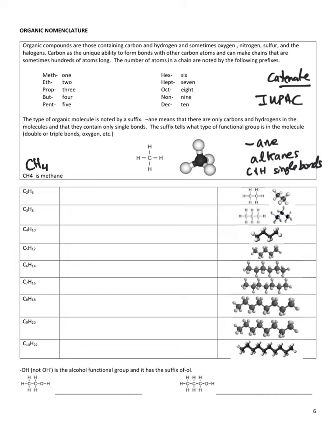One carbon in a chain is methane. Two carbons in a chain is ethane. Three carbons in a chain is propane, where prop tells you it's three carbons, and ane tells you it's nothing but carbon and hydrogen with only single bonds.